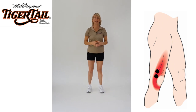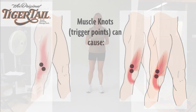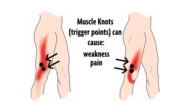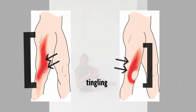Knowing which muscles to treat can make a difference in getting rid of your side of knee pain. As you can see by this illustration, the vastus lateralis muscle, one of the four quad muscles, can harbor trigger points or muscle knots that can cause weakness, pain, numbness or tingling into the side of the thigh and into the knee.